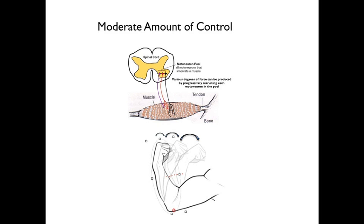As a final point, the different motor unit sizes of the neurons in the pool endow the muscle with a moderate degree of motor control. Stated differently, increments in contraction range from small, when the purple motor neuron is recruited, to a large increment when the black motor neuron is recruited, and an intermediate amount that can be imparted by the recruitment of the red neuron.